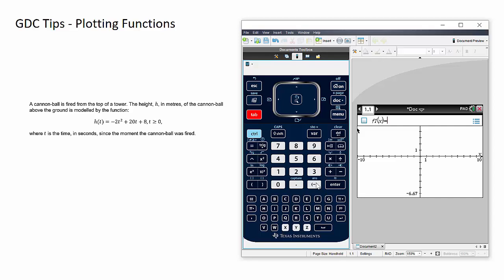So for this one here, I just enter this in: minus 2x squared plus 20x plus 8.